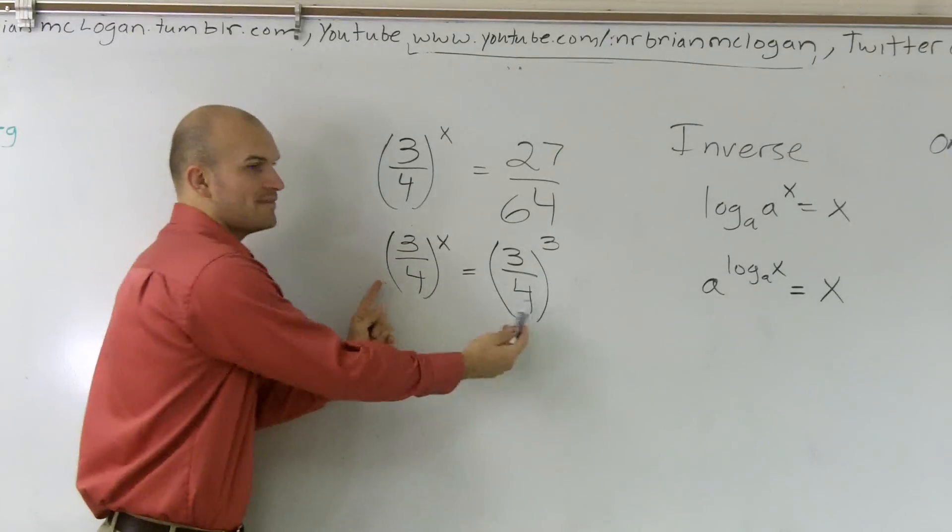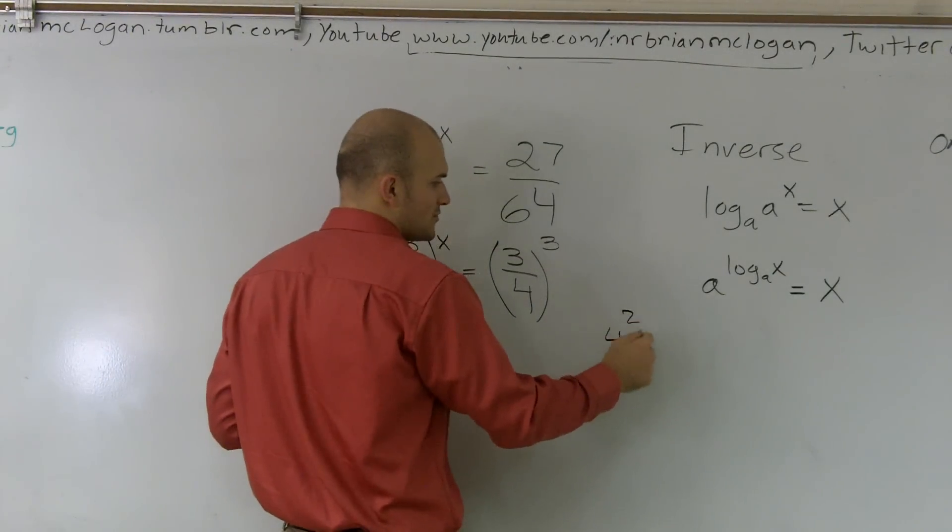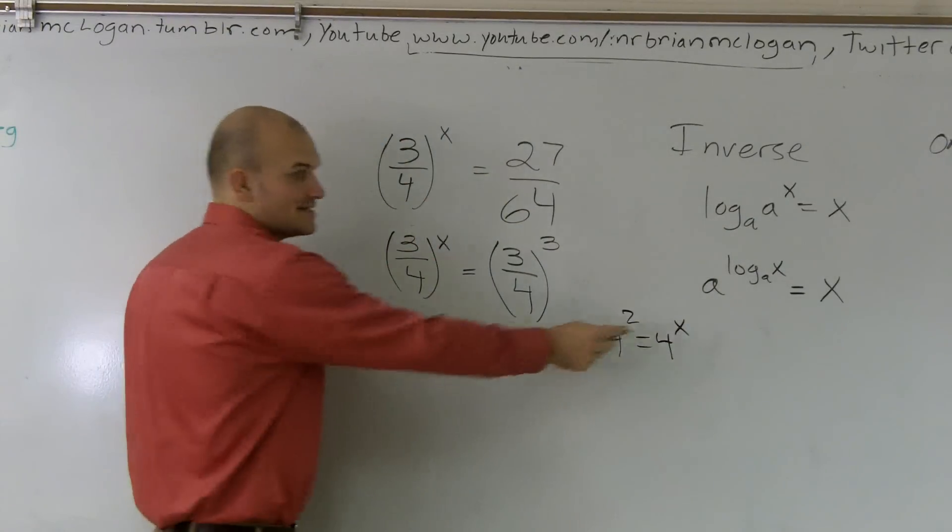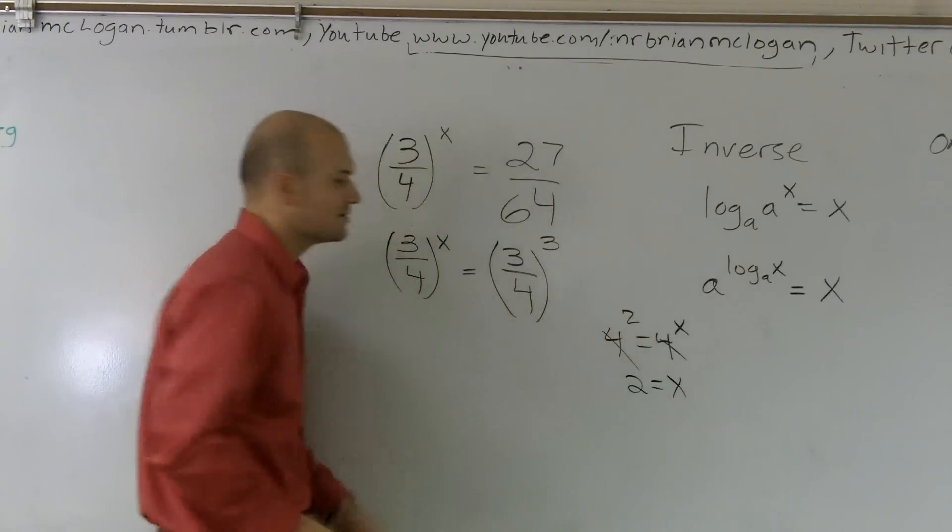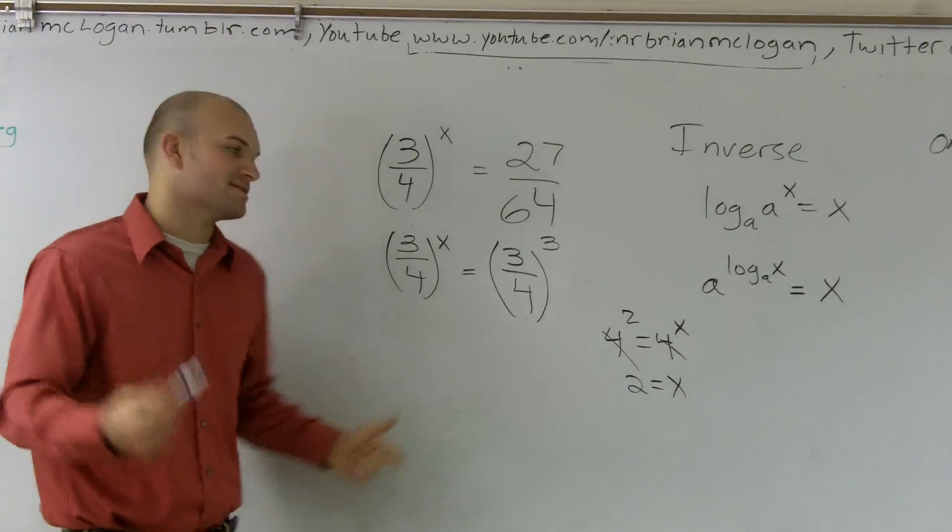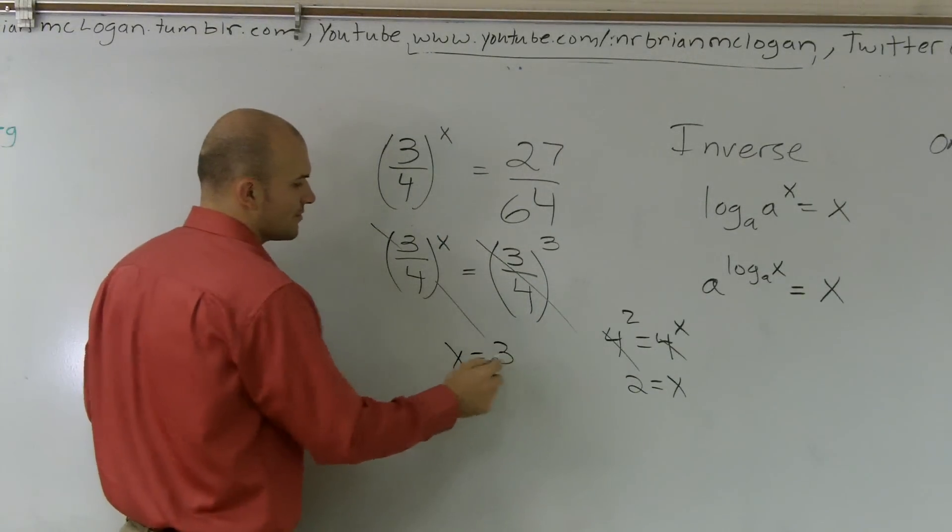So now, since I have them as the same base, right, we remember that 4 squared equals 4 to the x, right? This number has to be 2. Bases cancel out, 2 equals x. Well, guess what? We just have a more confusing base. It's just a fraction 3 fourths, but the same property applies. Cancel out, x equals 3.